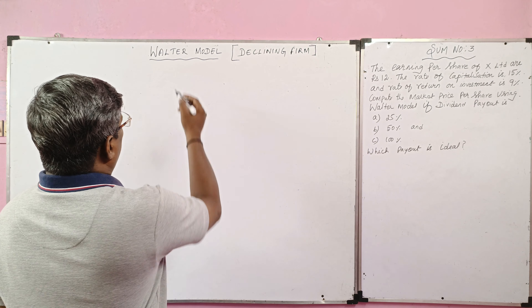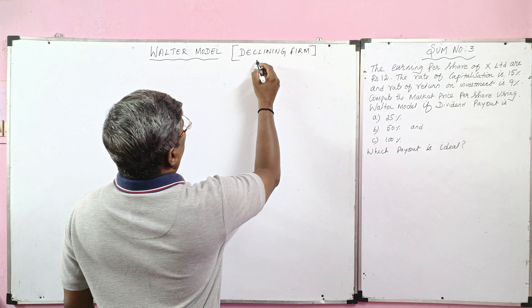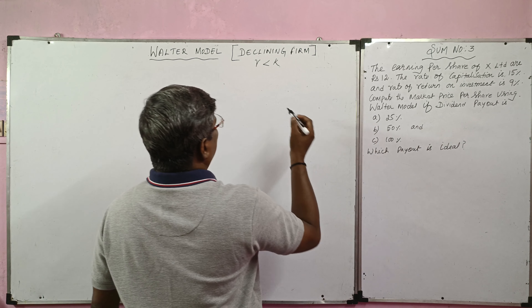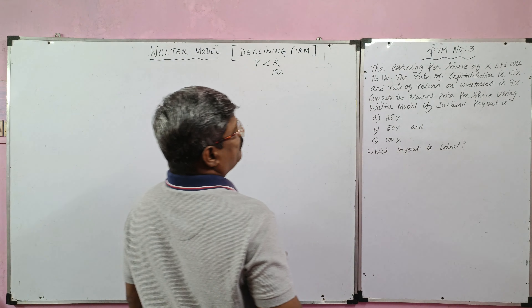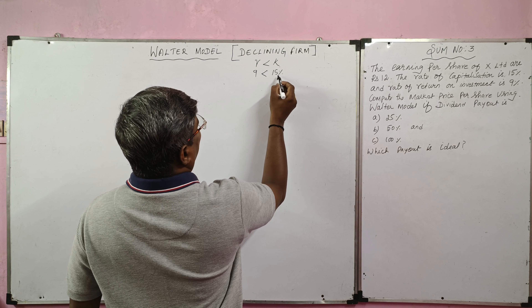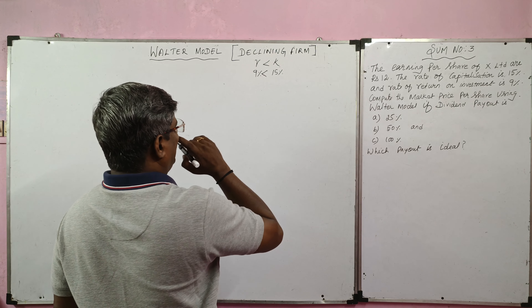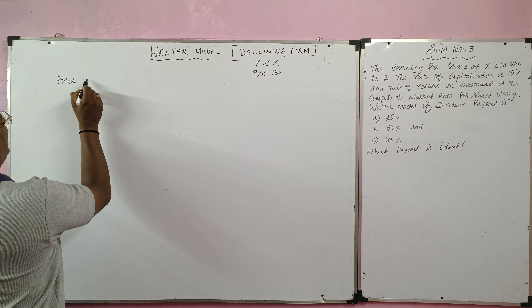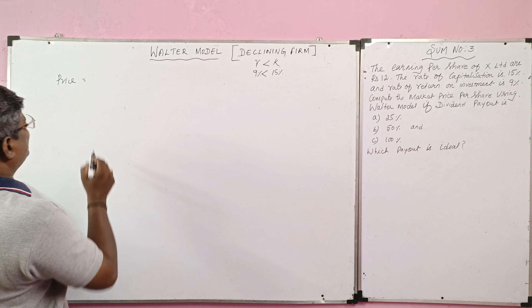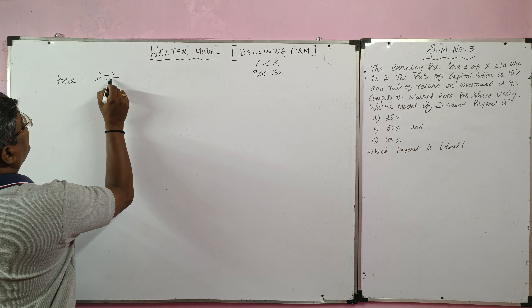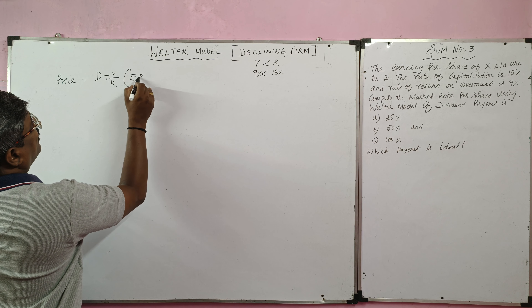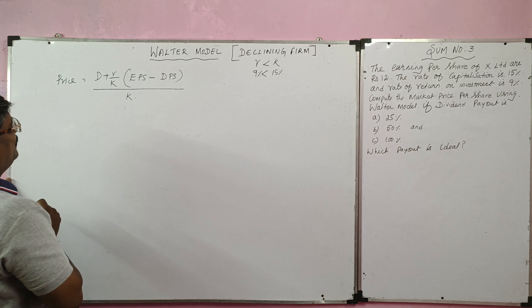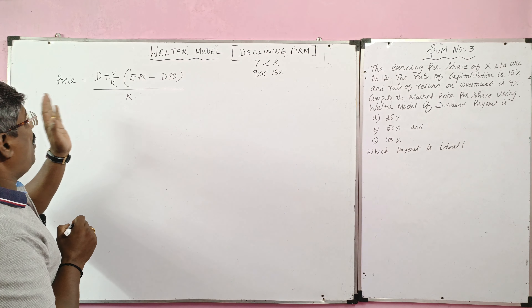In this problem, we are learning Walter model in relation to the declining firm. Here, R is lesser than K. The rate of capitalization is 15%, that is K. The rate of return on investment is 9%, that is R. Since the rate of return is less than cost of capital, we can assume this is a declining firm. The formula to find market price of equity share is: D plus (R by K) multiplied by (EPS minus DPS), divided by K.